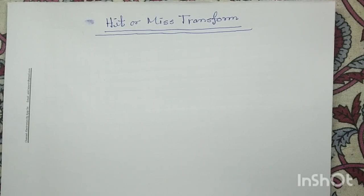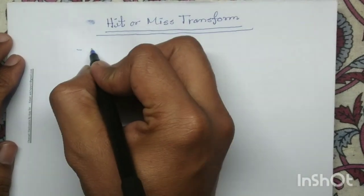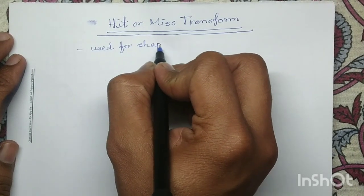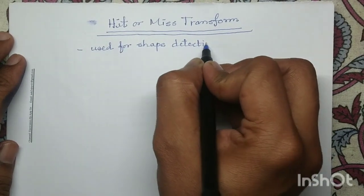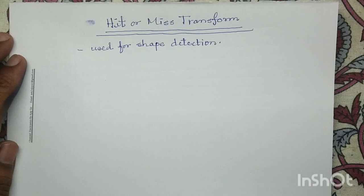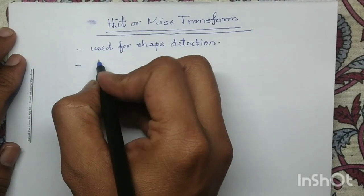Good morning all. Today we will discuss Hit or Miss Transformation. Hit or Miss Transformation is generally used for shape detection. It is a binary morphological operation where we look at the foreground pixels as well as the background pixels.